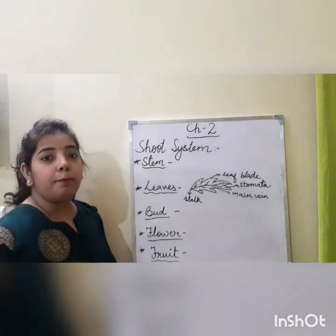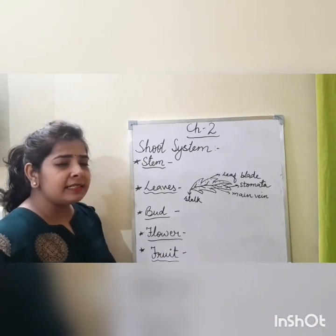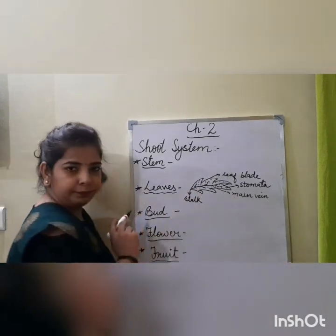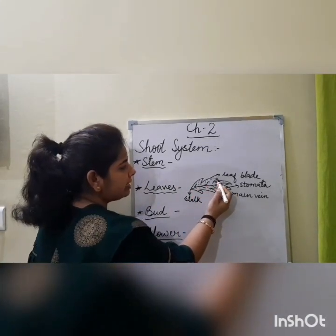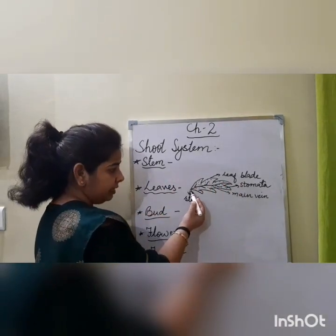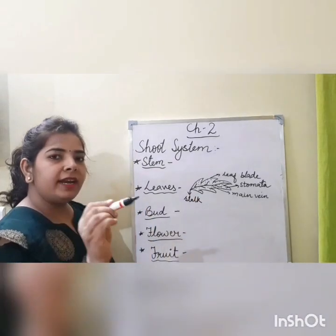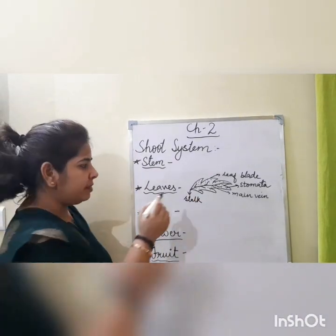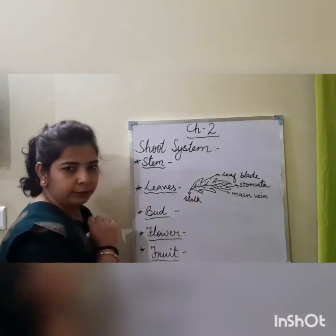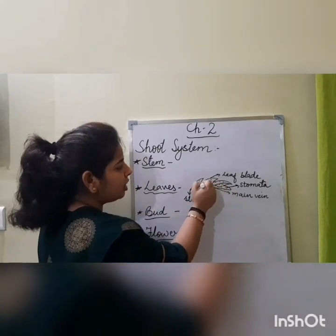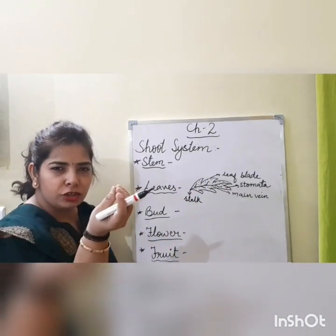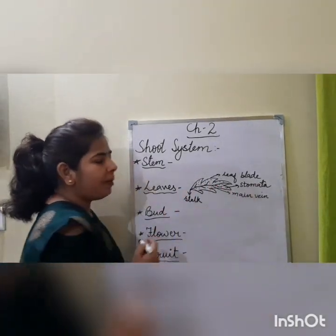Now we will study about parts of the leaf. We have the leaf blade, which is the flat surface of the leaf. Then there is the point where the leaf is attached to the stem. The leaf also has small pores — these are called stomata. And this is the main vein running through the middle of the leaf.